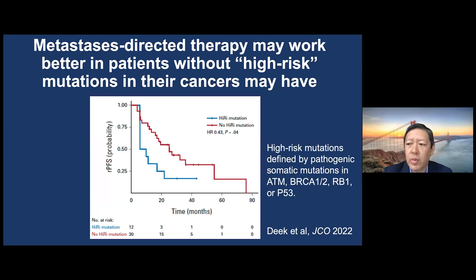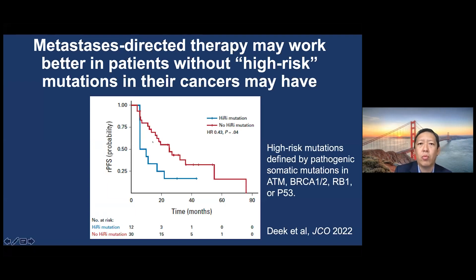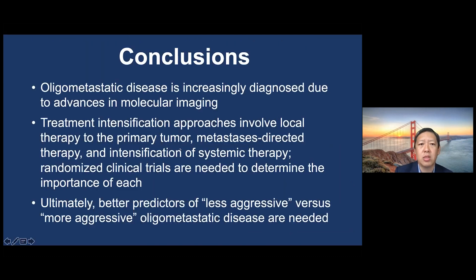Our mission at UCSF is to improve patient care through new therapies and better biomarkers. Working with investigators from the ORIOL and STOMP studies, we performed genomic sequencing on cancer samples from those patients. We found that metastasis-directed therapy — radiation to metastases — may work better in patients without high-risk mutations. These high-risk somatic mutations are defined as mutations in ATM, BRCA1/2, RB, or TP53. Patients with these mutations did worse than those without when treated with radiation to metastatic sites.